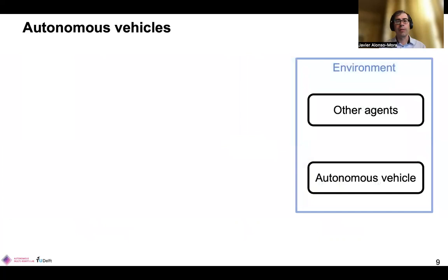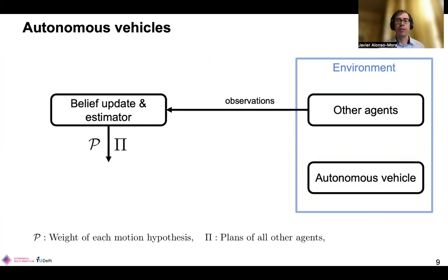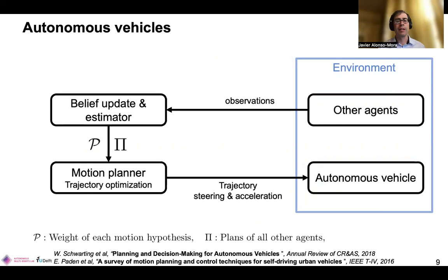You're probably all familiar with AVs — autonomous vehicles in an environment shared with other agents. They take observations from their sensors. With those they can make predictions of what will happen in the future, how other traffic participants will move, and those predictions are then used within the motion planner to compute the safe steering and acceleration inputs for our vehicle.